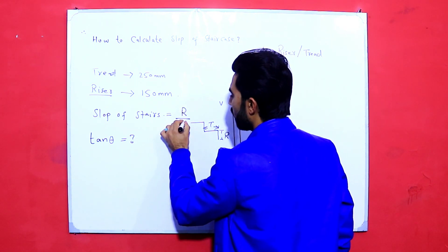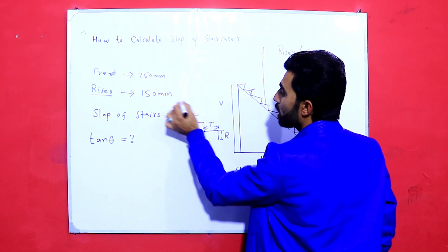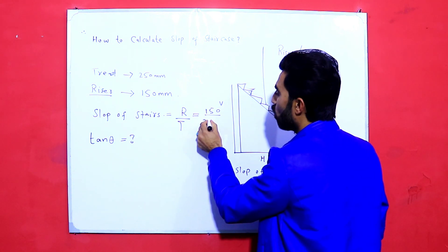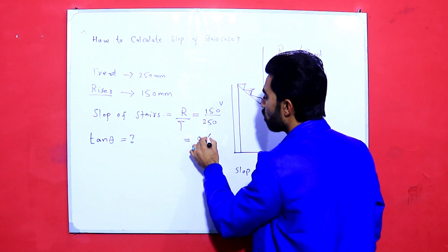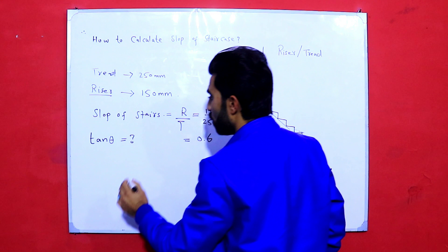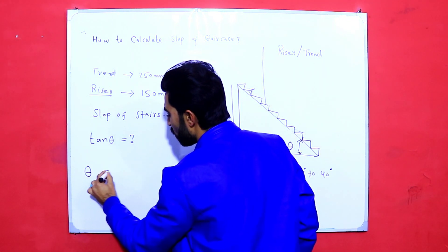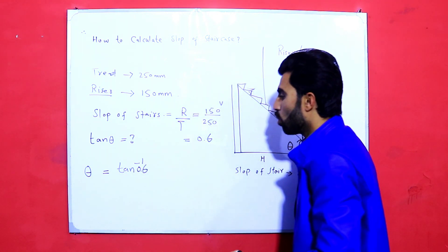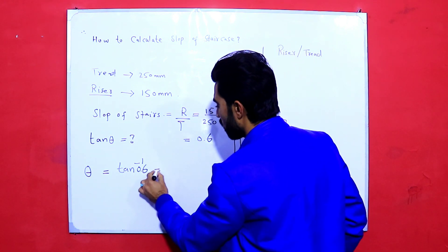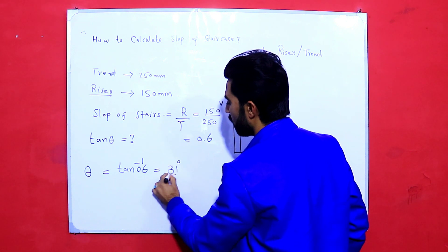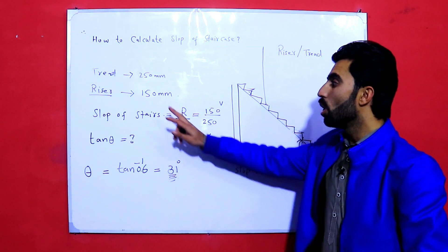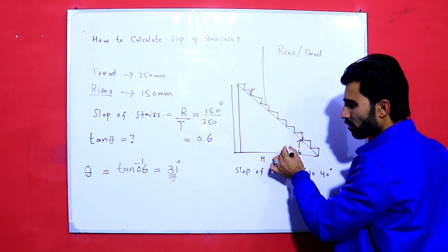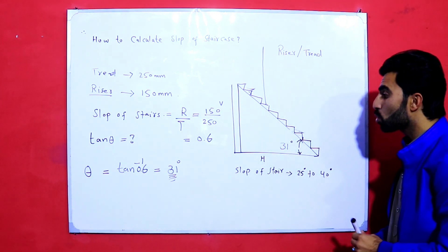Slope of staircase equals riser divided by tread. The riser is 150 mm and the tread is 250 mm, so 150 mm divided by 250 mm gives us 0.6. Now the angle is equal to tangent inverse of 0.6. When you calculate this on a calculator, it gives us 31 degrees for this staircase — if the riser is 150 mm and the tread is 250 mm, the angle becomes 31 degrees.